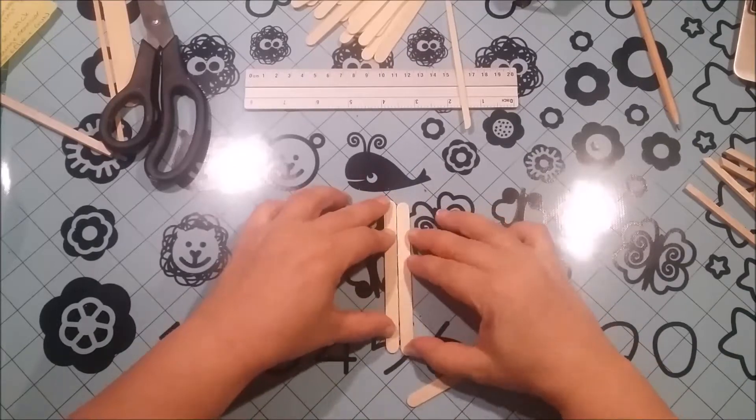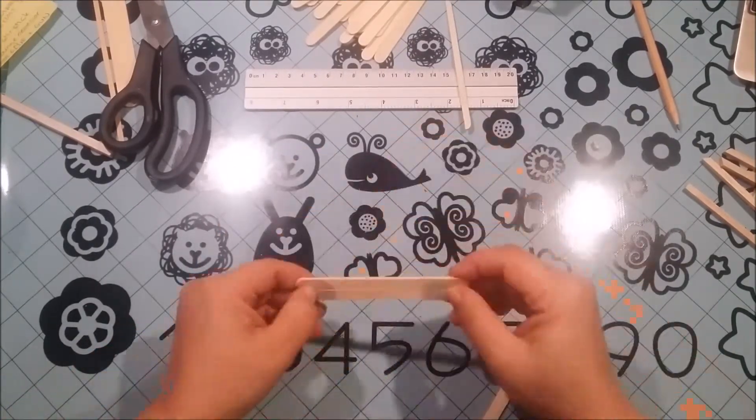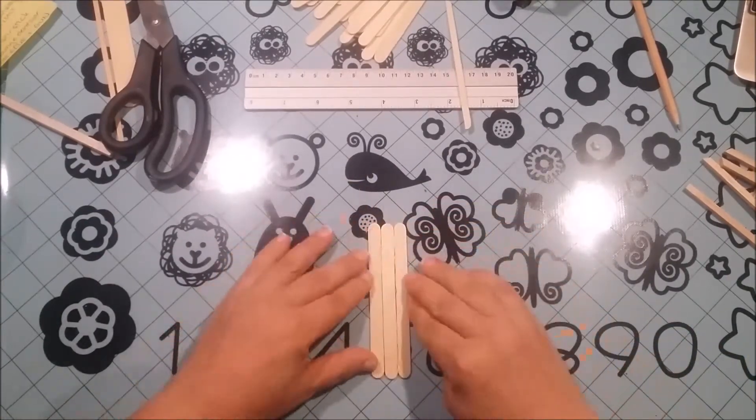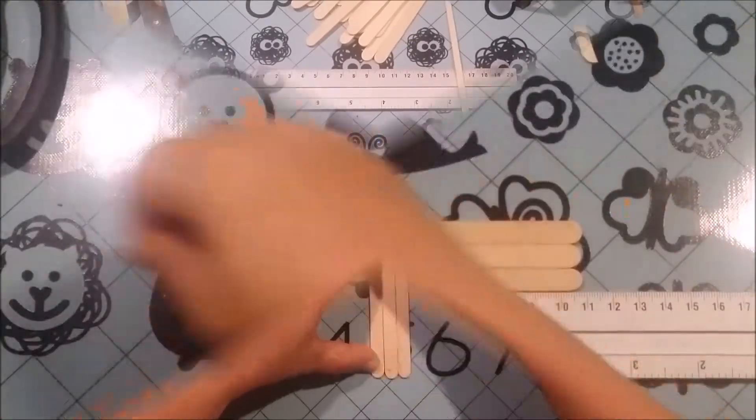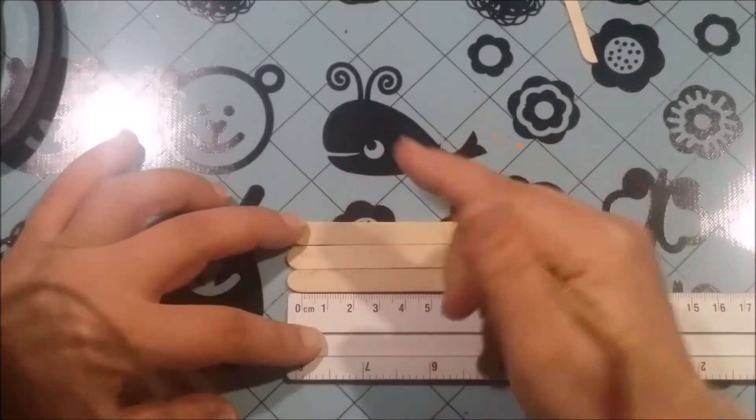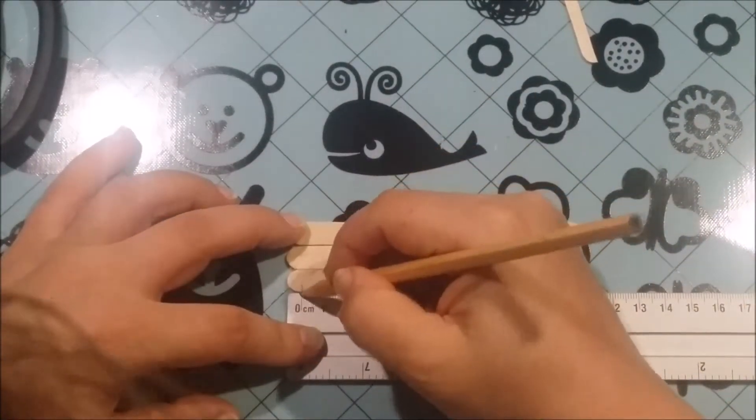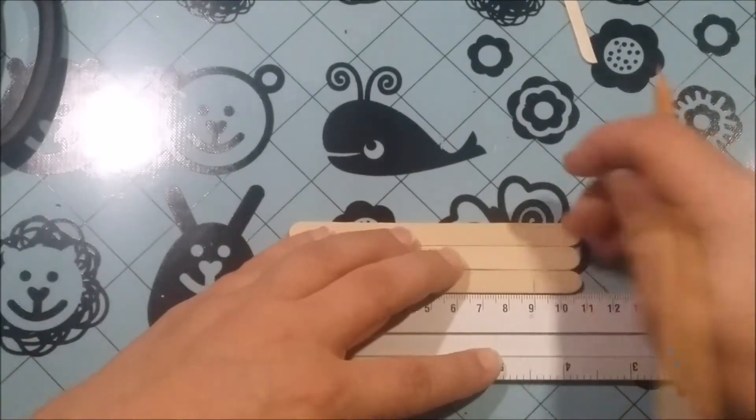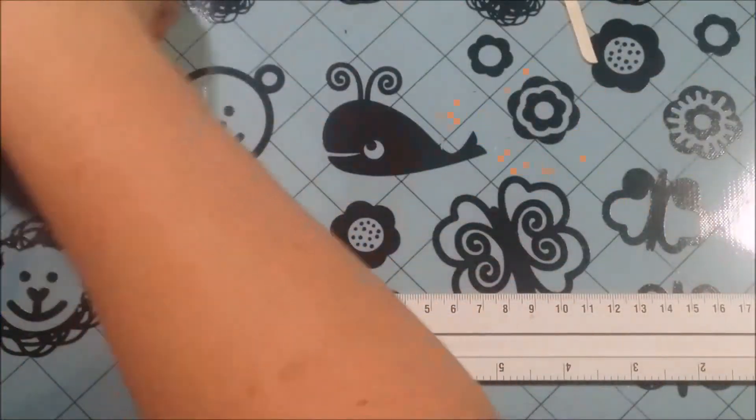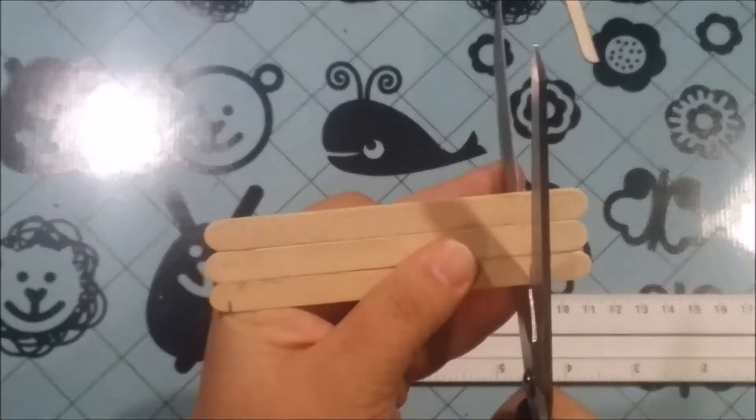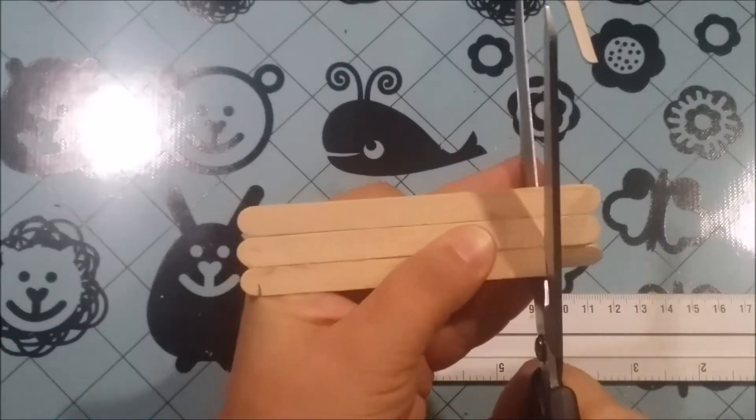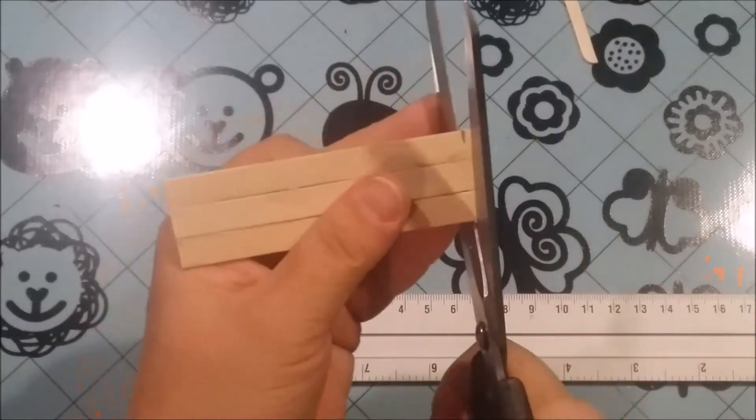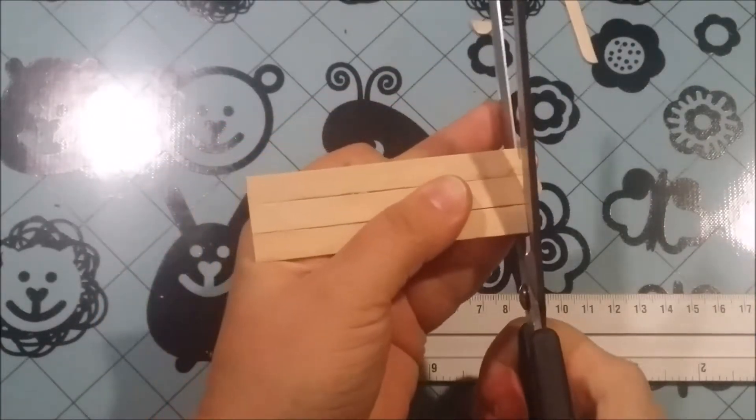And here I'm just taking three of my popsicle sticks and gluing them together. This is going to become the angled shelf in the front of the merchant stall. And I'm cutting it down, measuring it and cutting it down here. But this is something you can wait to do, because here I actually made a little bit of a mistake. Wait to do it until you have your legs glued down on your merchant stall, which will come up soon.